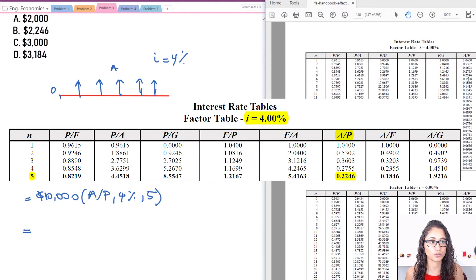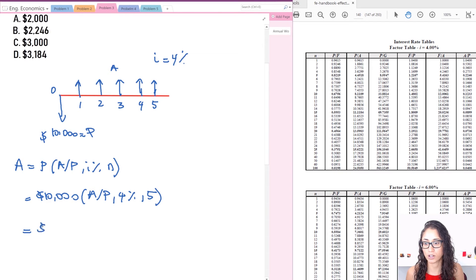And so it's going to be this number, 0.2246. So I have $10,000 times 0.2246.